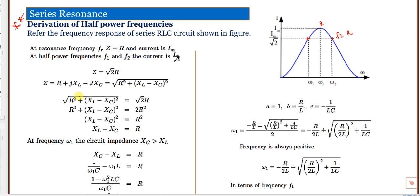At f1 and f2 (the half-power frequencies), Z equals root 2 times R. Substituting: √(R² + (X_L − X_C)²) = √2 · R. Squaring both sides: R² + (X_L − X_C)² = 2R². The R² terms cancel, giving (X_L − X_C)² = R², so R = ±(X_L − X_C).